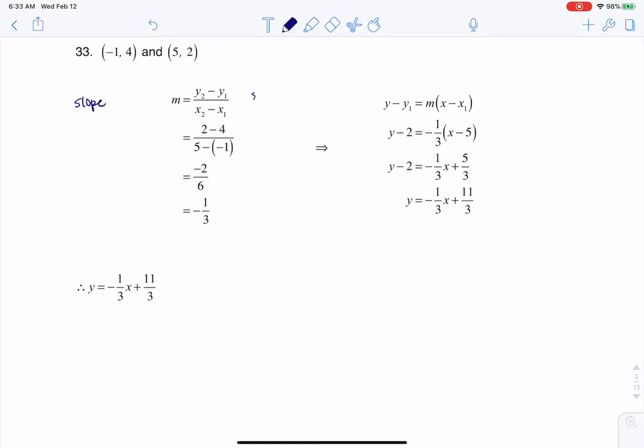And that's what you see me working through here. So I'm doing the change in y over change in x, and I arrive at my slope of negative one third.